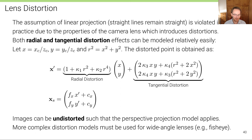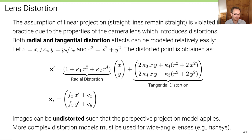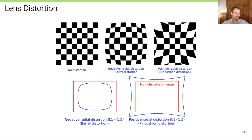More complex distortion models are needed for wide-angle lenses that don't follow a simple polynomial model. Common distortion types include barrel distortion, where straight lines bow outward, and pincushion distortion, the inverse effect. In both cases, lines in 3D are projected as curves. Depending on the type of distortion, the projected image also becomes smaller or larger, requiring a different crop of the image sensor to fully exploit the projected area.